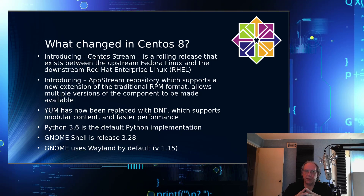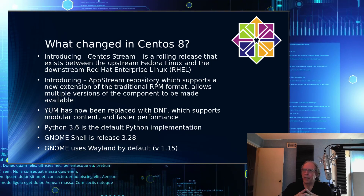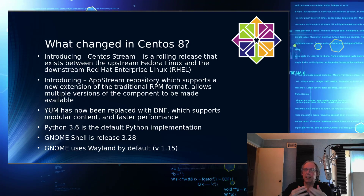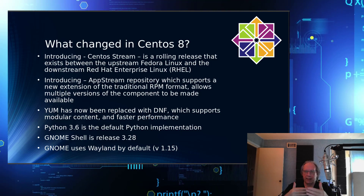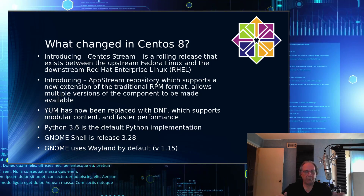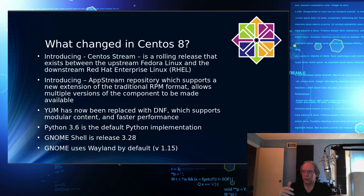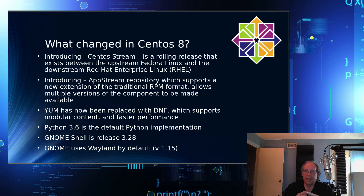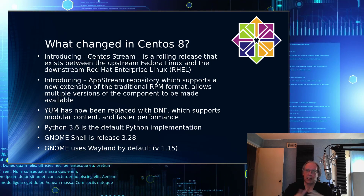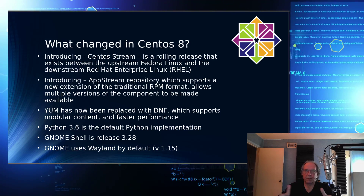So the first thing is they've introduced CentOS 8 Streams. CentOS Streams is a rolling release that sits between Fedora on the upstream side and Red Hat Linux on the downstream side — it kind of sits in the middle. And it's a new product, different from the deployable CentOS 8.